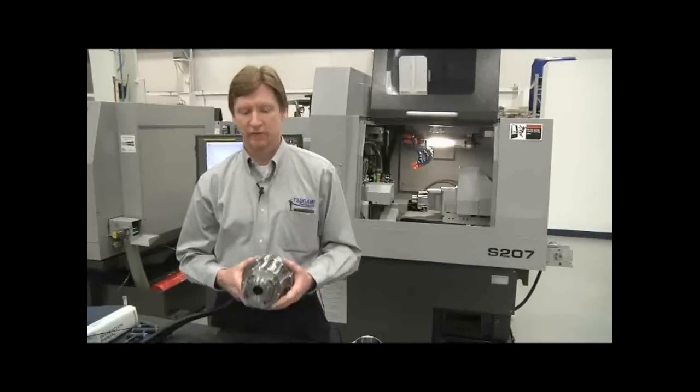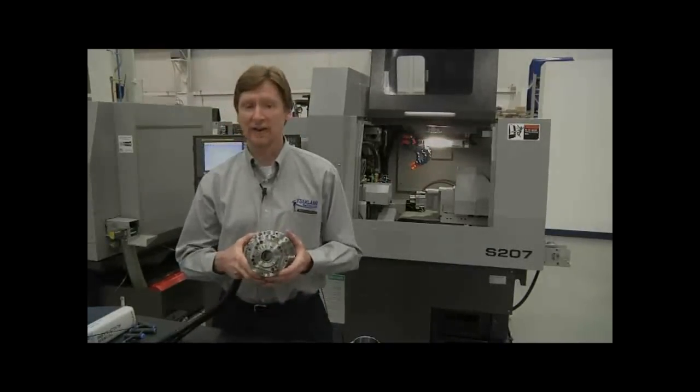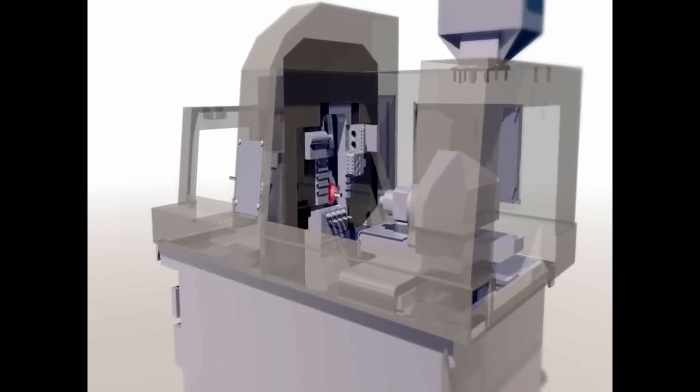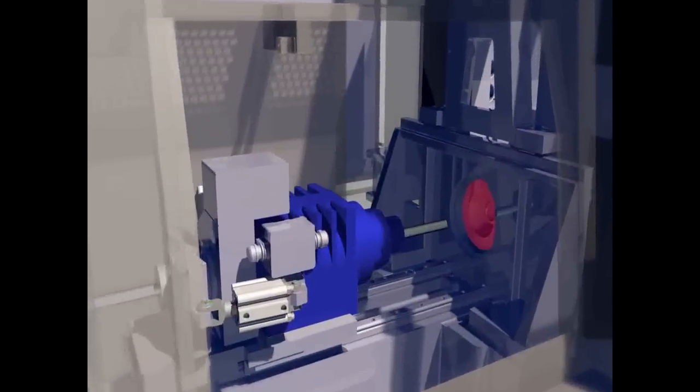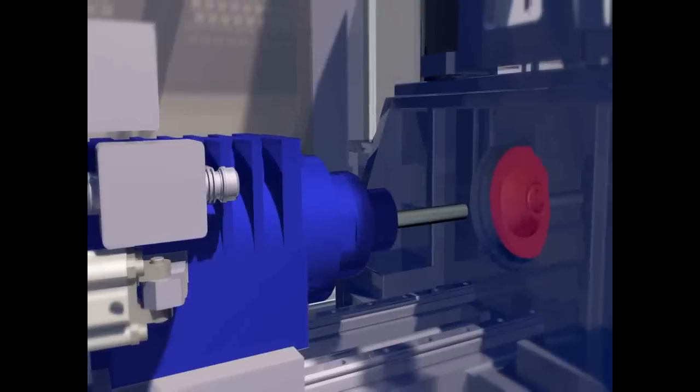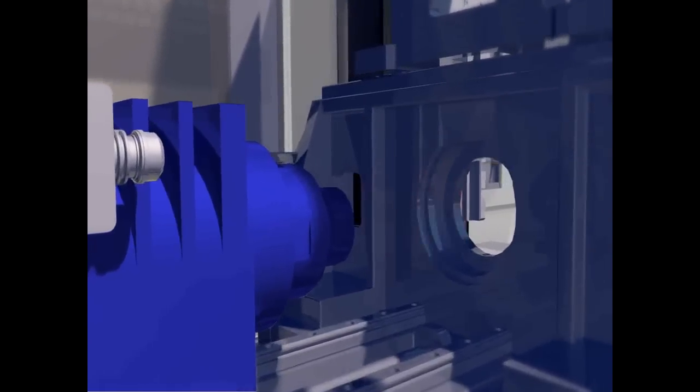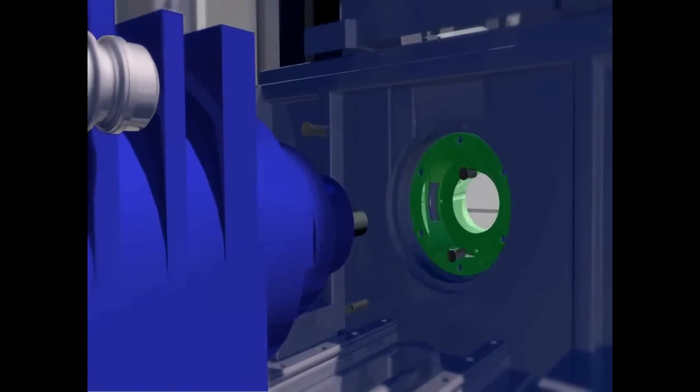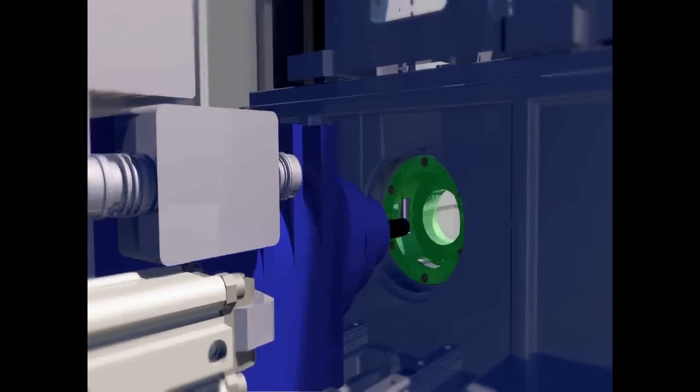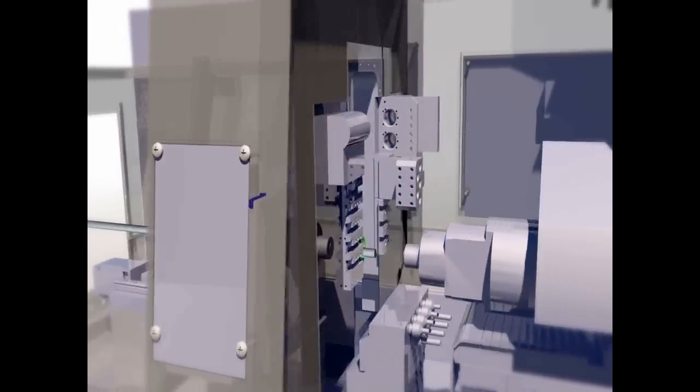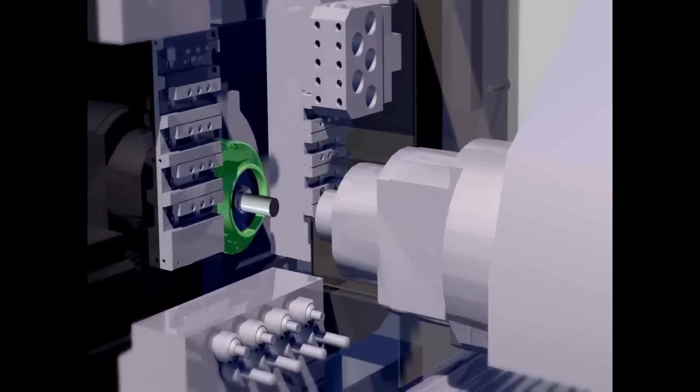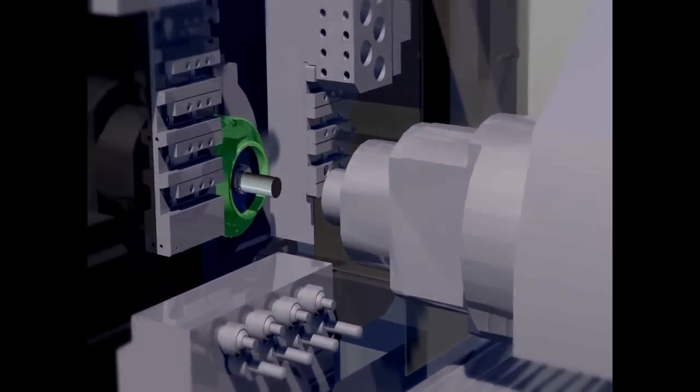To change over from Swiss type to non-Swiss type, you're going to remove the rotary guide bushing from the machine. The rotary guide bushing is held in place by six socket head cap screws and it generally has some other components plugged in. After removing that, you will install the chucker kit, which will allow you to bring the head stock up into the machining zone to machine shorter workpieces and get a much shorter remnant.